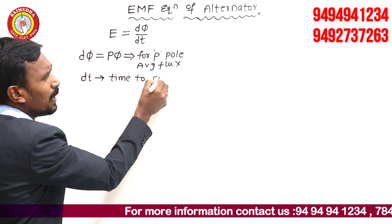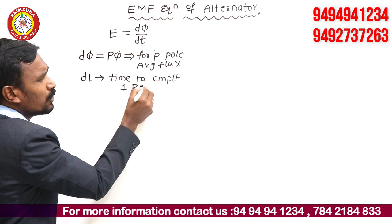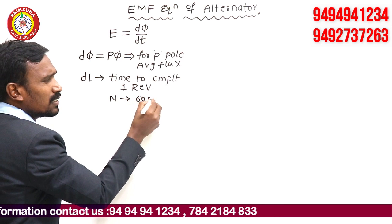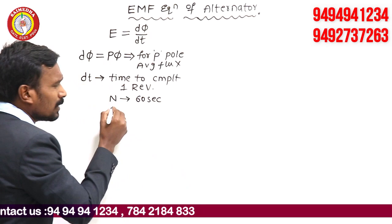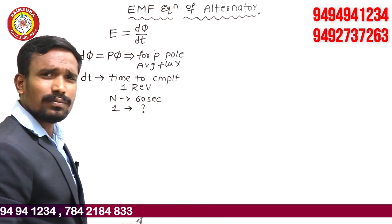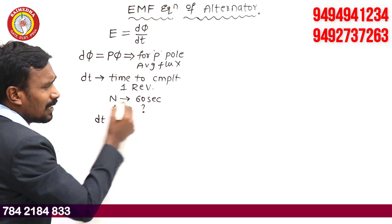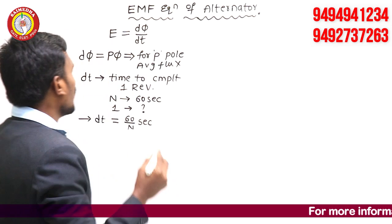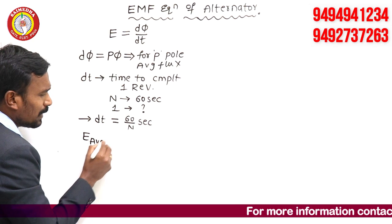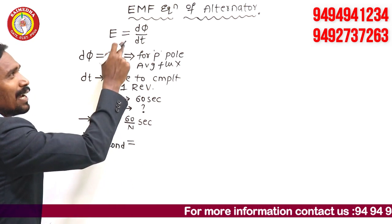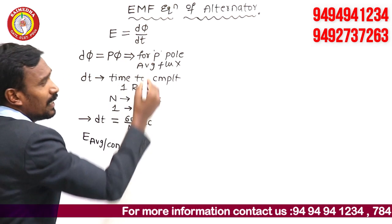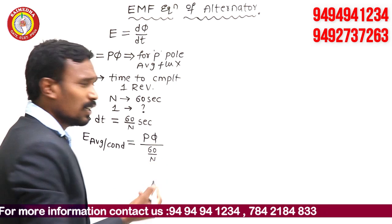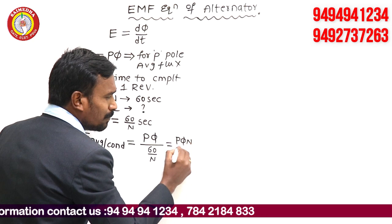Time to complete one revolution — we know N revolutions per minute, that is N revolutions per 60 seconds. So for one revolution, the time taken is 60/N seconds. This is dt and that is dΦ. Now calculate the EMF: E average per conductor is equals to dΦ divided by dt, which is pΦ divided by (60/N). So simply, E average per conductor is equals to pΦN/60.